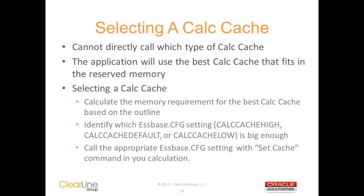Unfortunately, there is no way to directly select the type of calc cache you're going to use. The application will simply use the best of the three types of calc caches that fits into the reserved memory being called from the configuration file by the set line in your calculation. The good news is that you can control what it selects by completing the following steps. First, you need to determine the memory requirement for the best calc cache based on your outline. Then you need to identify the calc cache setting in the configuration file — calc cache high, default, or low — that's big enough for it to be selected. Finally, you just call that setting from your calc script with the set cache command.